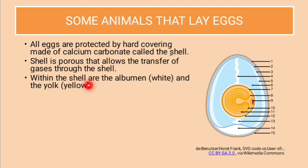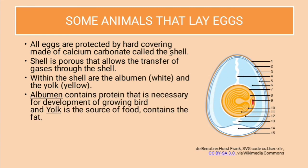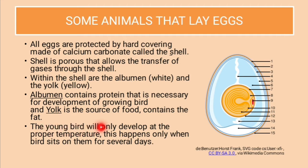Within the shell is the albumin, which is white in color. Here this is albumin, and then there is a yellow colored yolk. Albumin is a white colored transparent fluid, and the yellow colored part is the yolk. The albumin contains a protein that is necessary for the development of the growing bird. And the yolk is a source of food that contains fats.